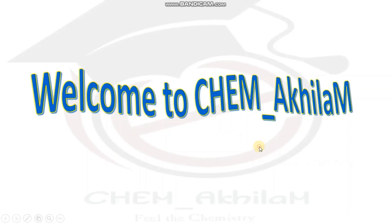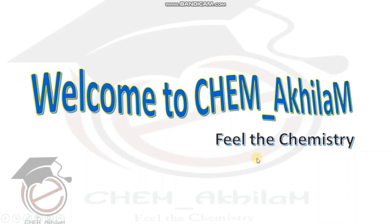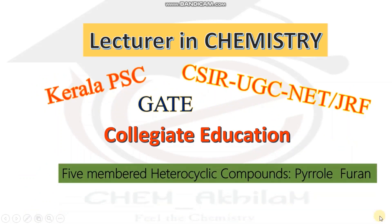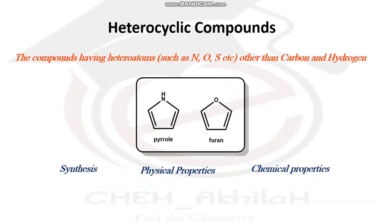Welcome to Chemagillum Field, the chemistry channel. Today we are going to discuss five-membered heterocyclic compounds, mainly pyrrole and furan. Hydrocarbons contain only hydrogen and carbon atoms. When some carbon atoms are replaced with hetero atoms, the compound is known as a heterocyclic compound. We will discuss monocyclic compounds with one hetero atom, and today we will cover some synthetic methods and physical and chemical properties of these two compounds.